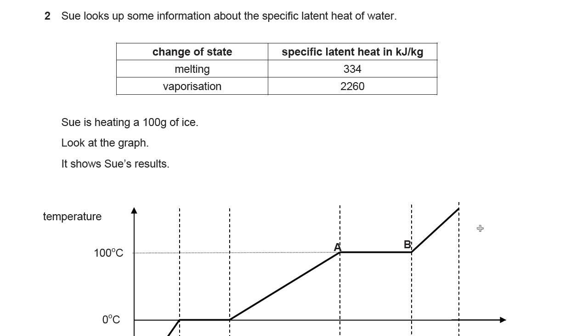Okay, first of all you need to decide which section were you after? Were you interested in this point here where it's melting or this point where it's vaporizing? Well you asked about A and B, so this section here. You don't need that data there, don't use that data there. Hopefully you've looked at the equation bank and found the equation energy is mass times specific latent heat.